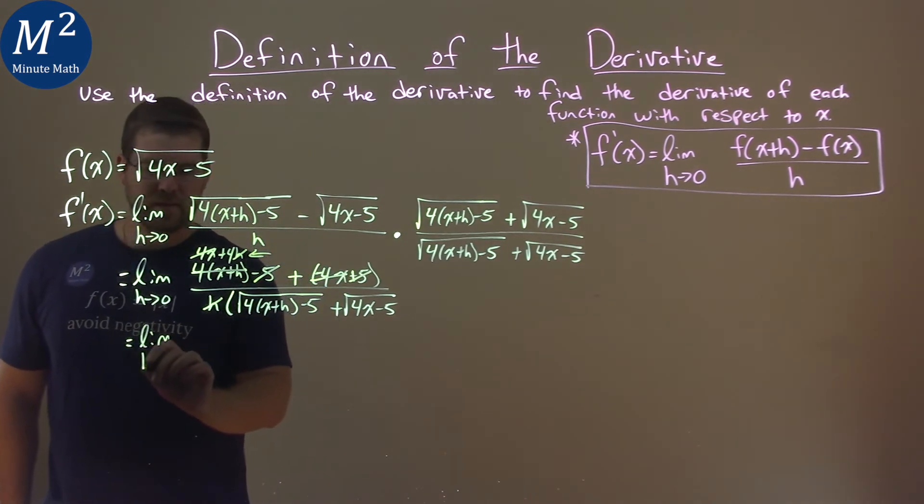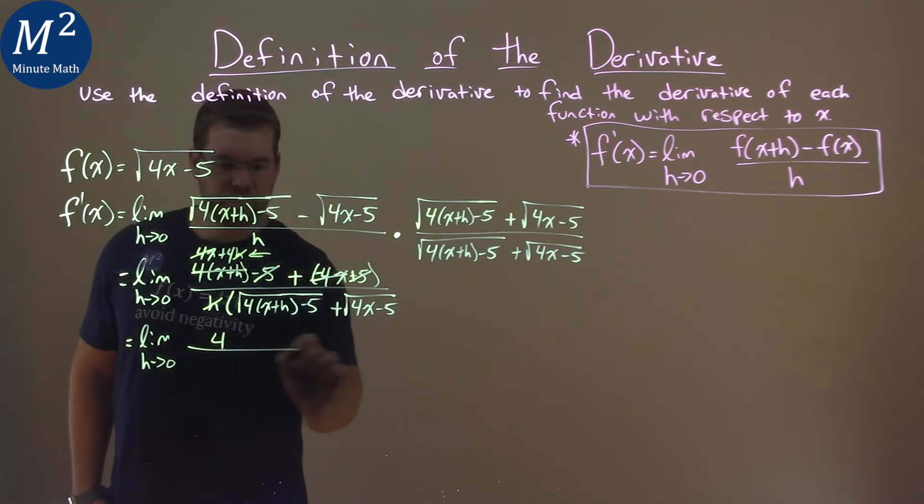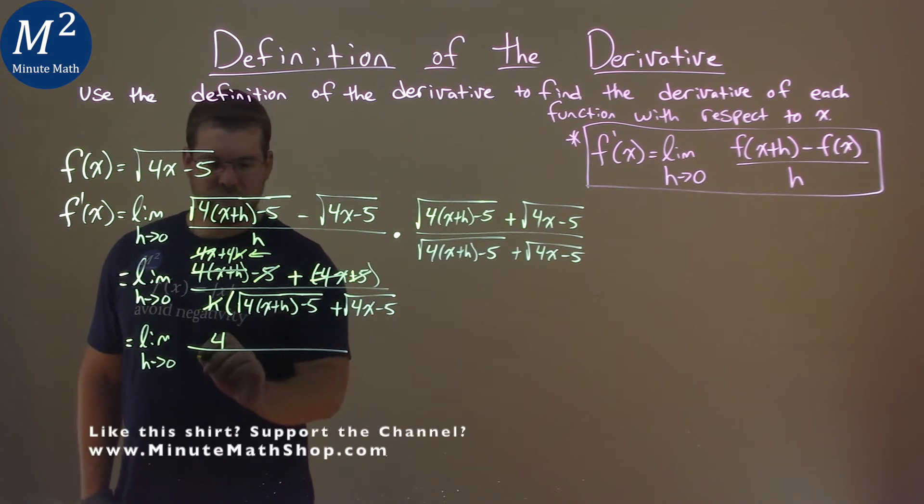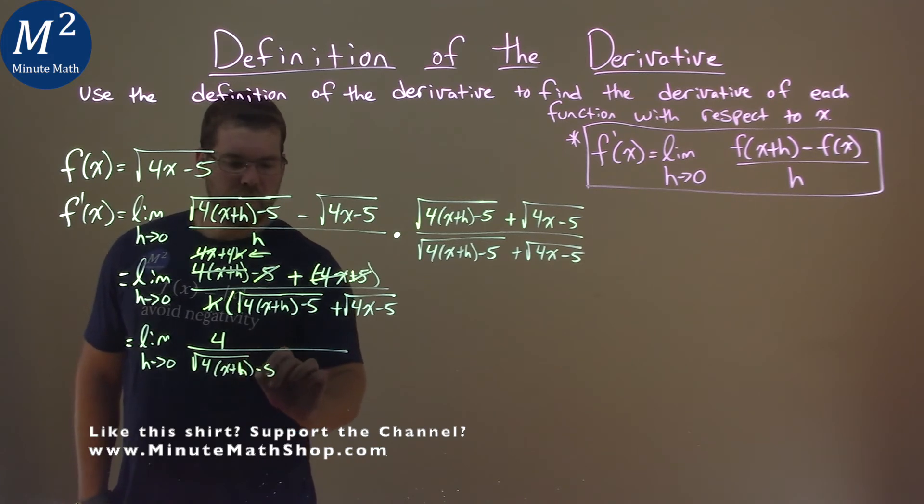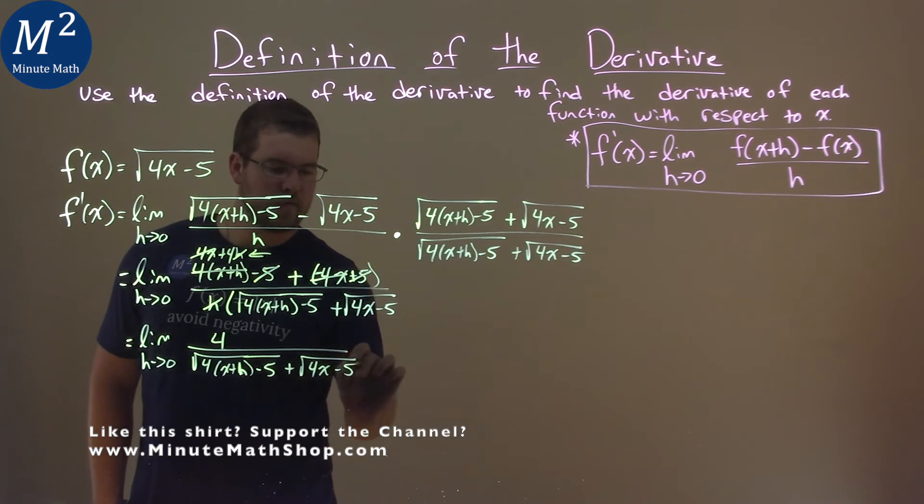The limit as h approaches 0 of just a 4 in the numerator. Denominator is all of that that's left, the square root of 4 times (x plus h) minus 5 plus the square root of 4x minus 5.